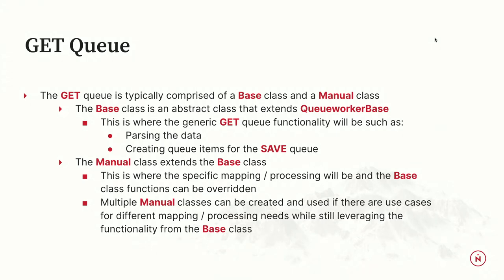The get queue is comprised of a base class and a manual class. The base class is an abstract class that extends the queue worker base — this is where all the generic get functionality lives: parsing data and creating queue items for the save queue. The manual class extends the base class and is where more specific mapping can live, intended to override some of the base. You can have multiple manual classes — for example, two imports where parsing the CSV is the same but the data mapping is different for each, so they have their own manual classes still extending that base.